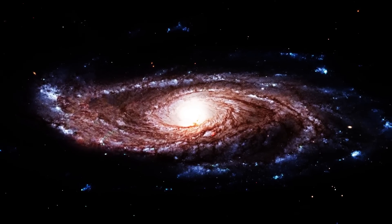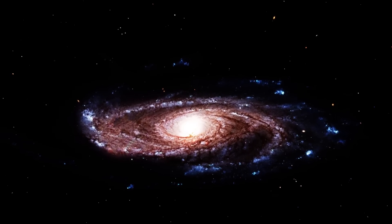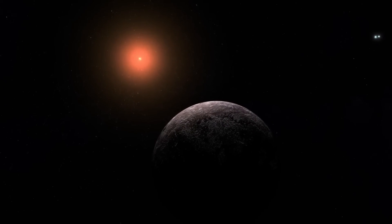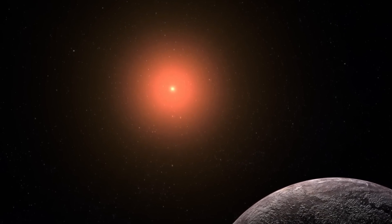To provide perspective, if the Milky Way were scaled down to the size of one of these red dot galaxies, the closest star to the Sun, Proxima Centauri, which is 4.2 light-years away, would reside within our solar system.